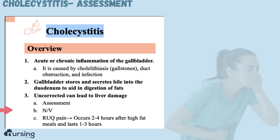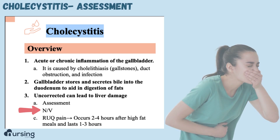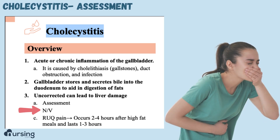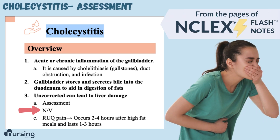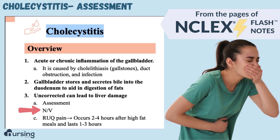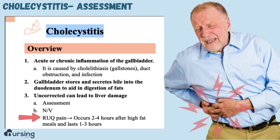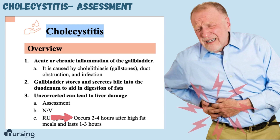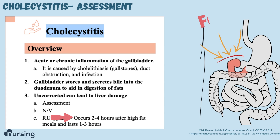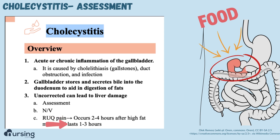Patients are going to come in reporting nausea and vomiting. Those are pretty general symptoms, so we need to dig in a little deeper. We'll see that they have severe right upper quadrant pain. It tends to be worse about two to four hours after they eat a high-fat meal — that's when the food is making its way into the duodenum — and the pain lasts for about one to three hours.